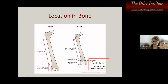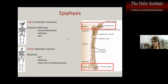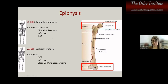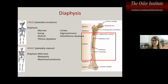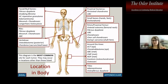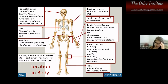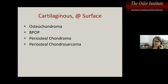In kids, certain tumors occur more in the epiphysis vs. adults, and similarly for metaphysis and diaphysis. Use the body diagram as a guide for the most common site of each tumor, though they can occur in various locations. We'll go through differential diagnoses with discussion of genetics and location.